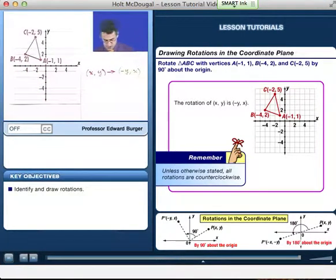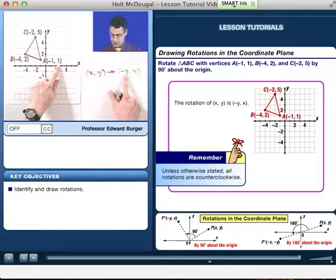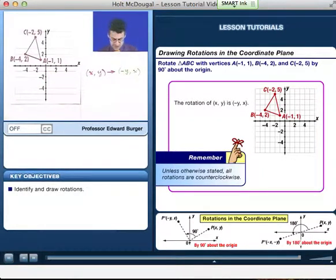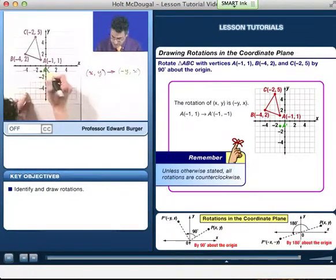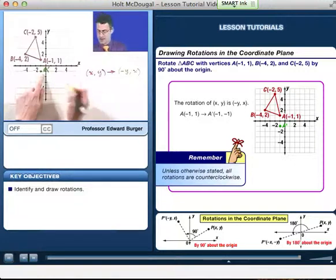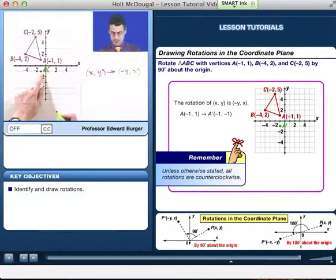So where is A going to get mapped to? Well, what I send it to is negative Y, which is going to be negative 1, negative 1. So negative 1, negative 1 is right here. That's going to be the A prime. A prime is how we mark the image of A under this map, which is going to be the point that has coordinates negative 1, negative 1.